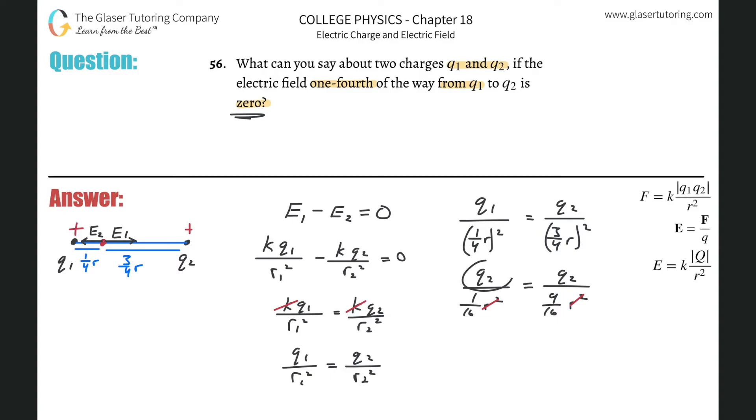So now somehow this thing turned into a two from a one. Again, I'm just seeing, I'm testing you guys. So how many mistakes can you catch me in this problem? That's what I'm trying to test you on. So basically now we realize that this will work out to just be q one over one sixteenth is going to be equal to q two over nine sixteenths.